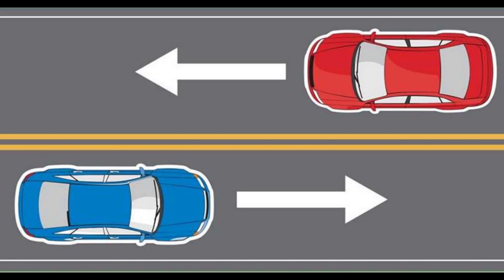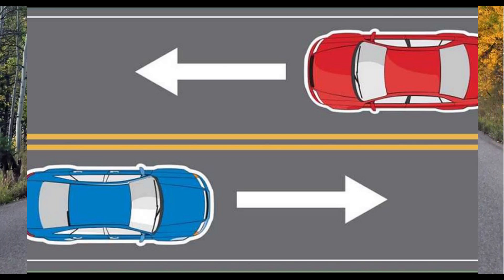The Eurostat, ITF, and UNECE Glossary for Transport Statistics defines a road as a line of communication traveled way open to public traffic primarily for the use of road motor vehicles using a stabilized base other than rails or airstrips. Included are paved roads and other roads with a stabilized base, such as gravel roads. Roads also cover streets, bridges, tunnels, supporting structures, junctions, crossings, and interchanges; toll roads are also included. Excluded are dedicated cycle lanes.